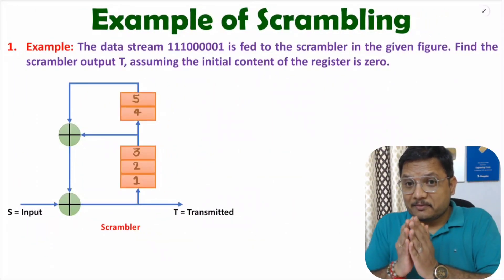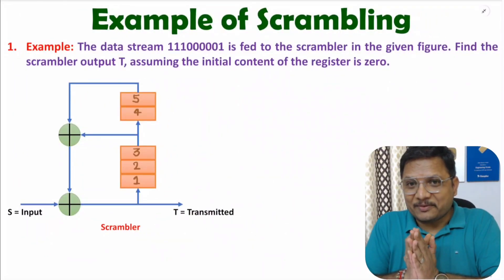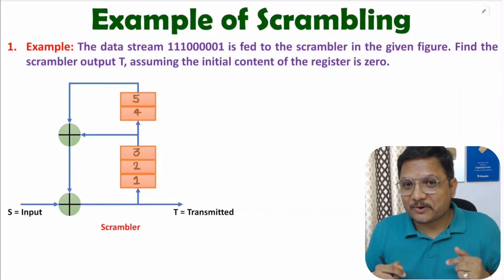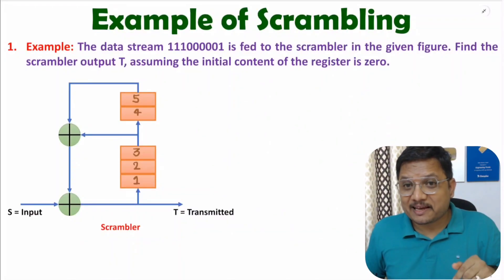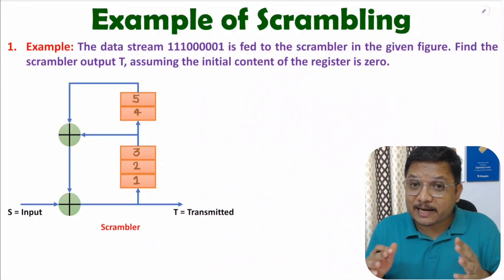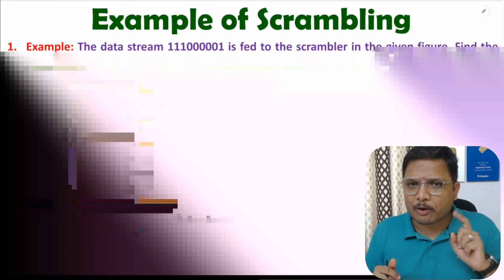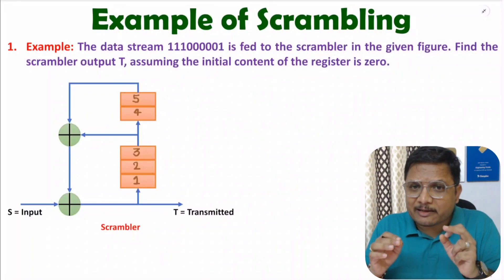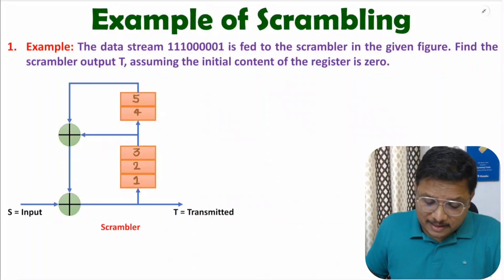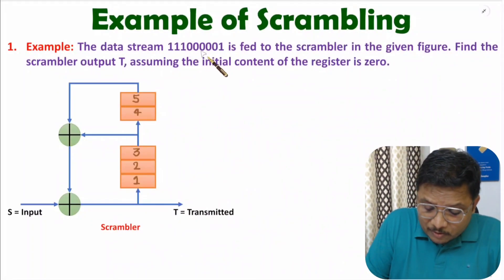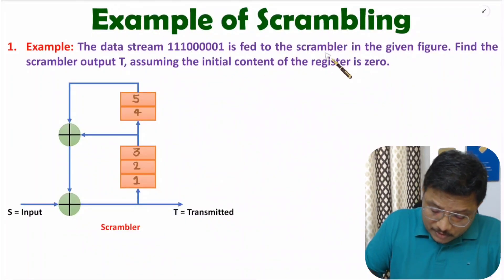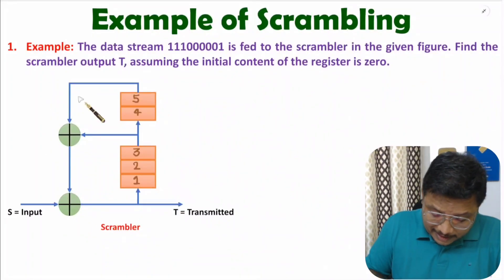Hello friends, welcome to Engineering Funda Family. In this video I will solve one very interesting example based on scrambling. In my last video I explained fundamentals of scrambling. Here we will solve one problem. The question gives us a data stream of triple 1, 5 times 0, and 1, that is given to a scrambler.